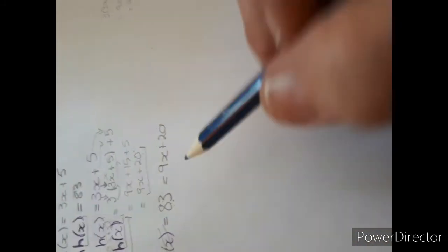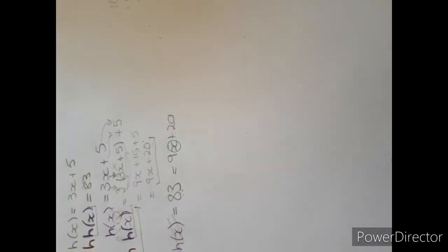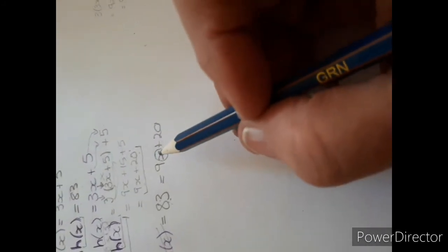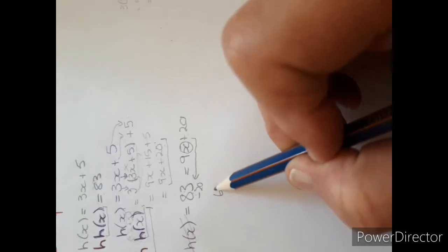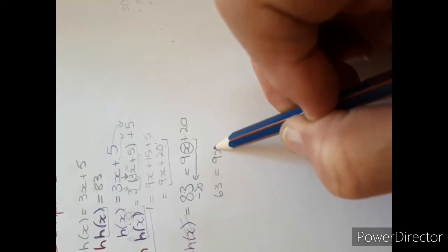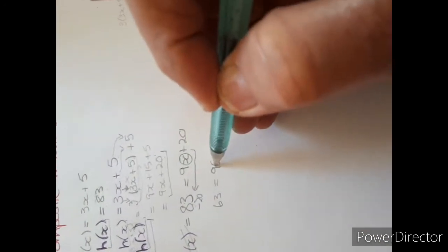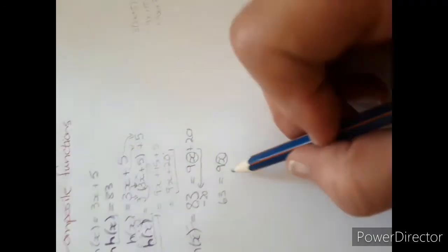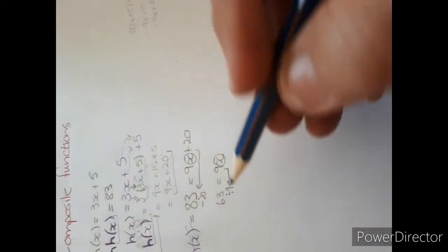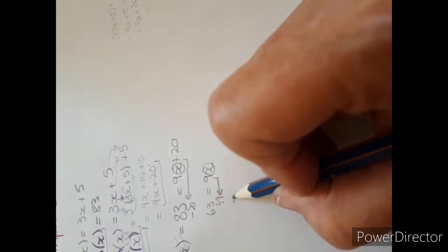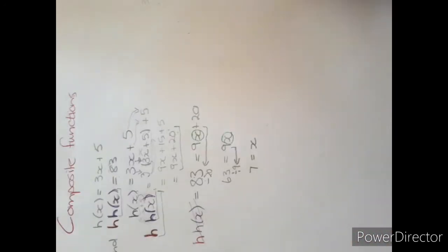Now we can just simply solve for x. We want to find out what x is. So first, you take over the 20 — that becomes negative 20. So 83 minus 20 is 63, equals 9x. Then we want to find x, meaning we must now move the 9. It is multiplied here, so it will become divided by 9 on that side, and 63 divided by 9 is 7. So x equals 7.